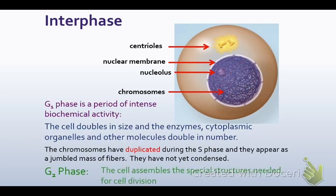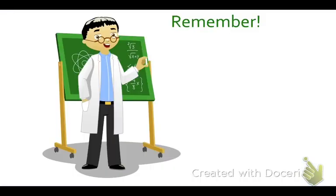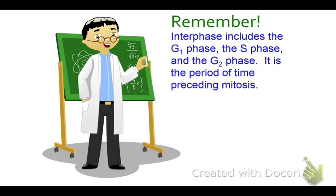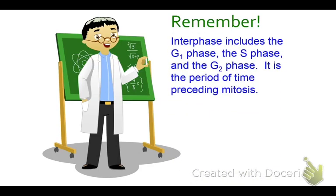In G2 phase, the cell assembles the special structures needed for cell division, such as the centrioles. So remember, interphase includes the G1, S, and G2 phases, and it is the period of time preceding mitosis.